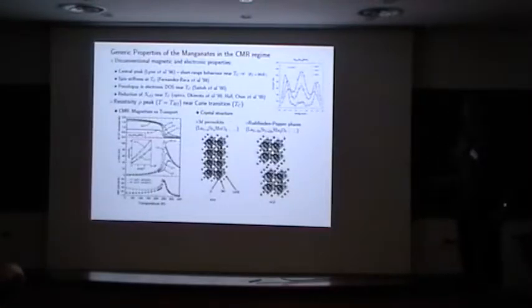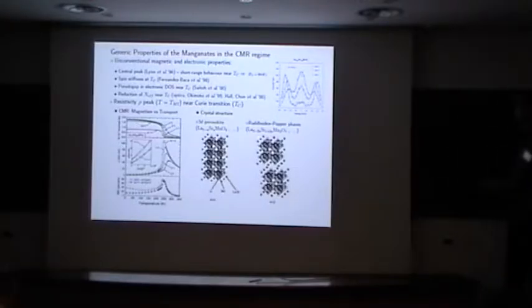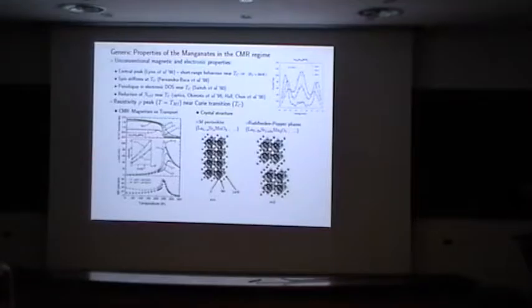This happens in materials of varying chemical composition. There can be different ions here and different crystal structures. Here you have the perovskite, here you have the bi-layer compounds. Here you can see in more details the magnetization curves at various fields, the resistivities and the magnetic resistance. And there is a number of generic unconventional magnetic and electronic properties shown by those compounds.